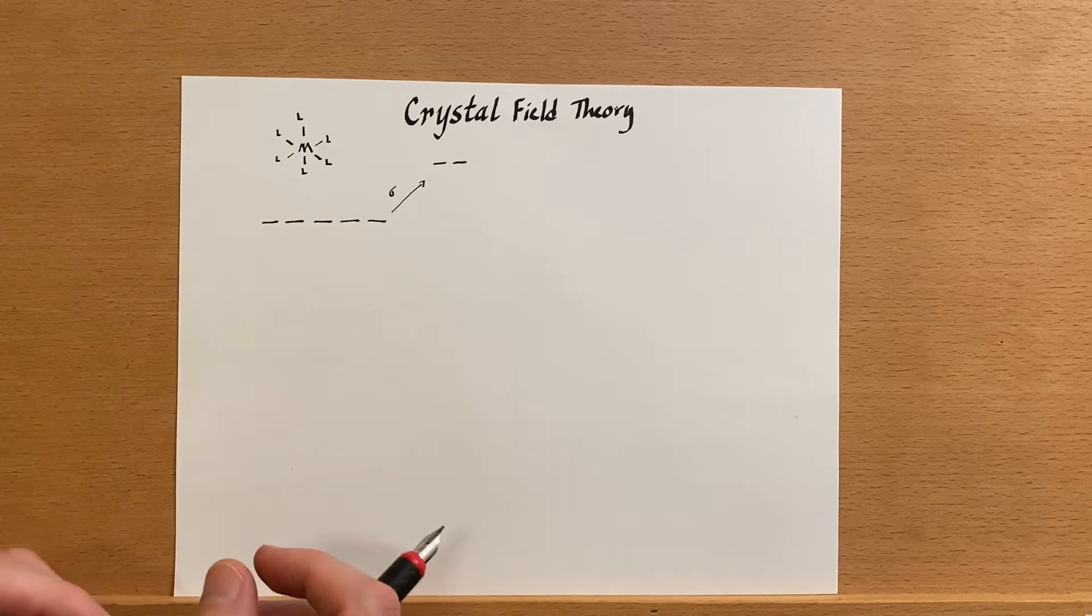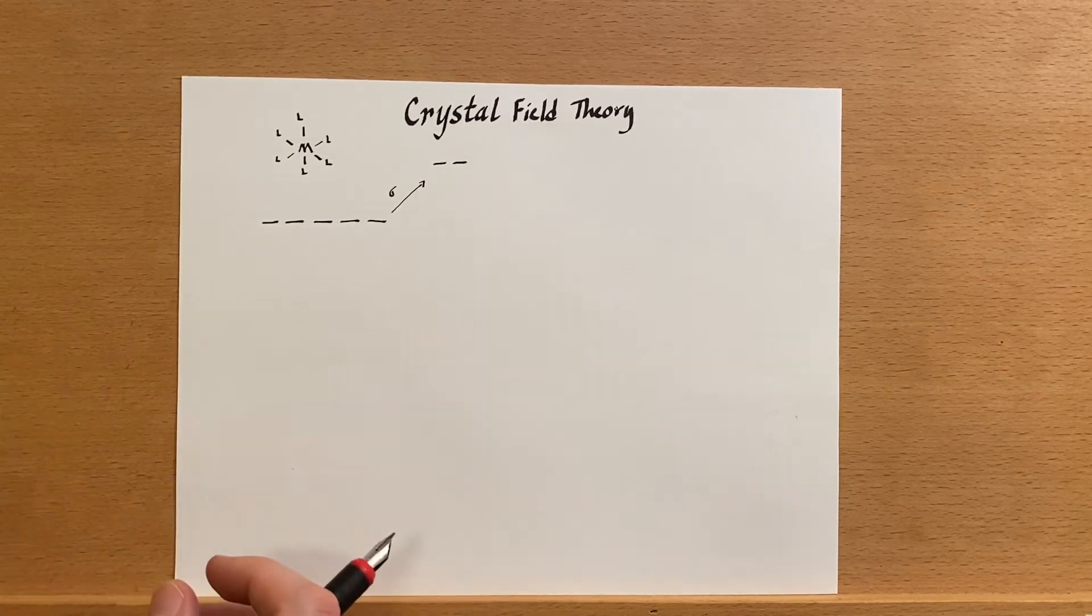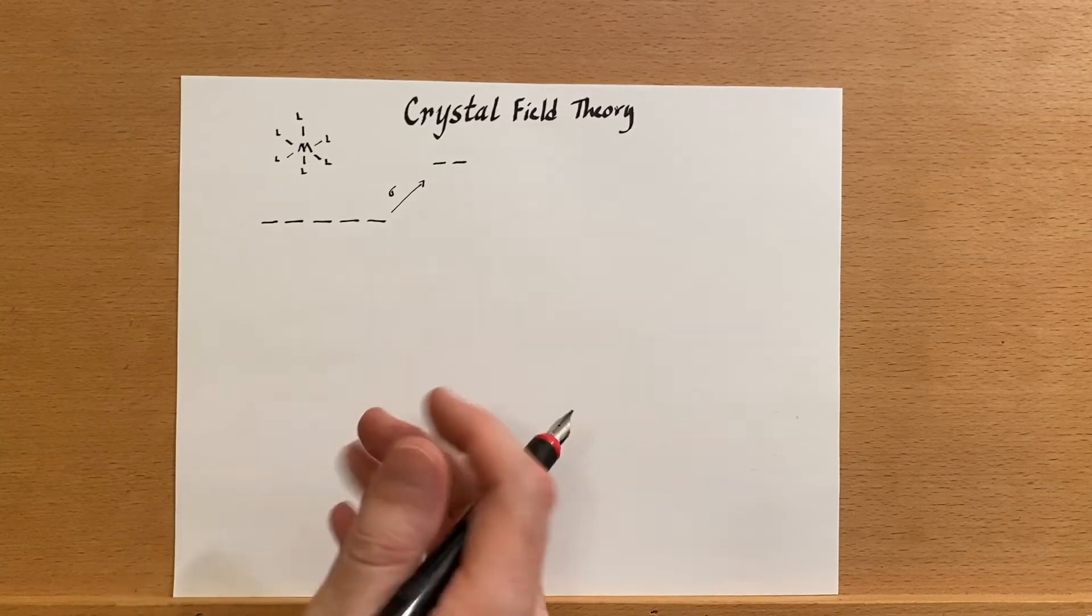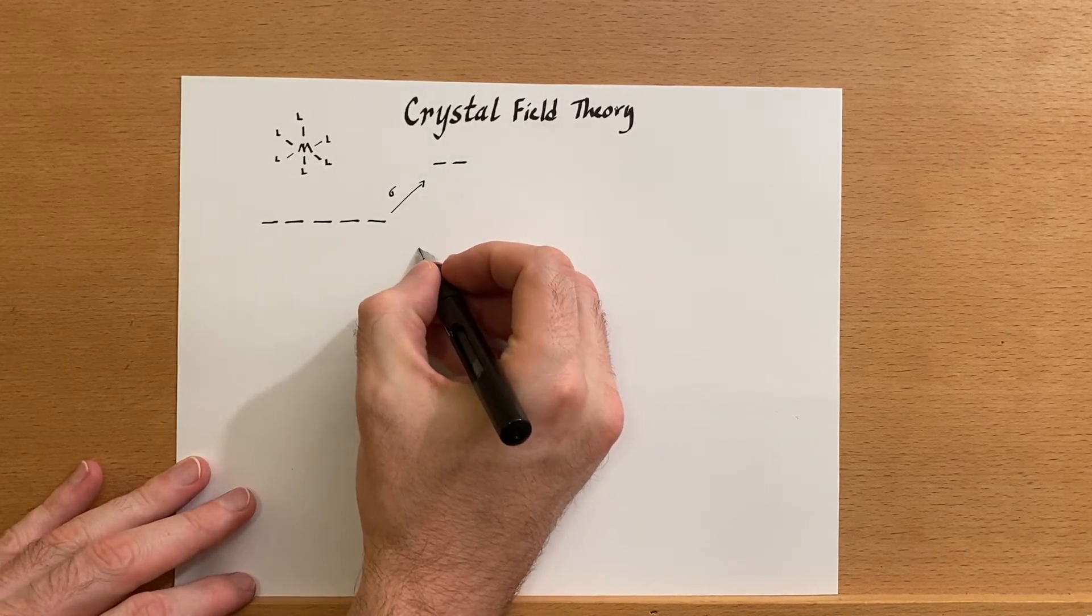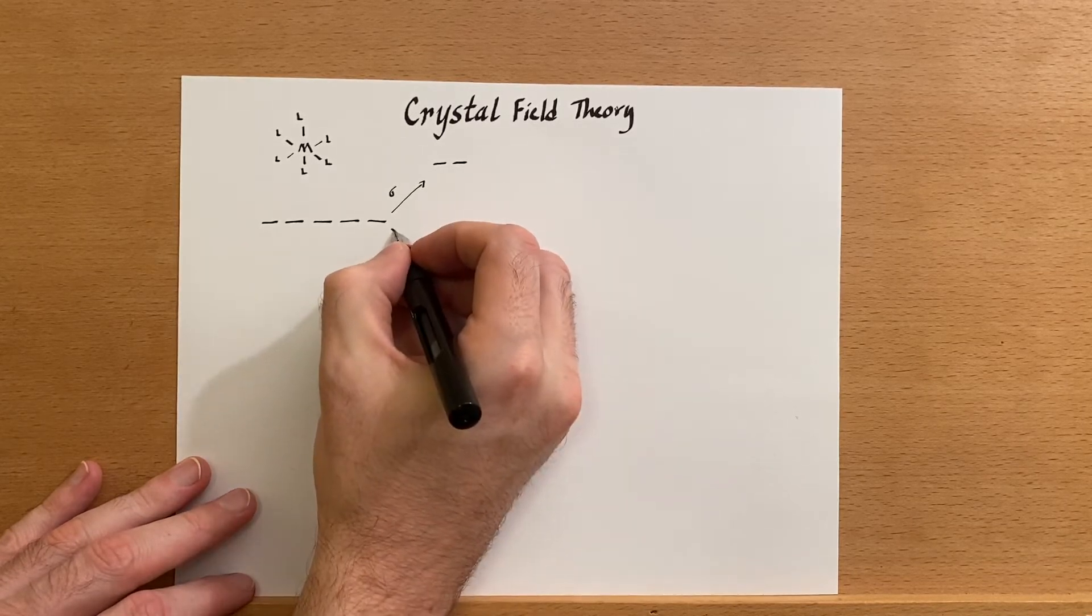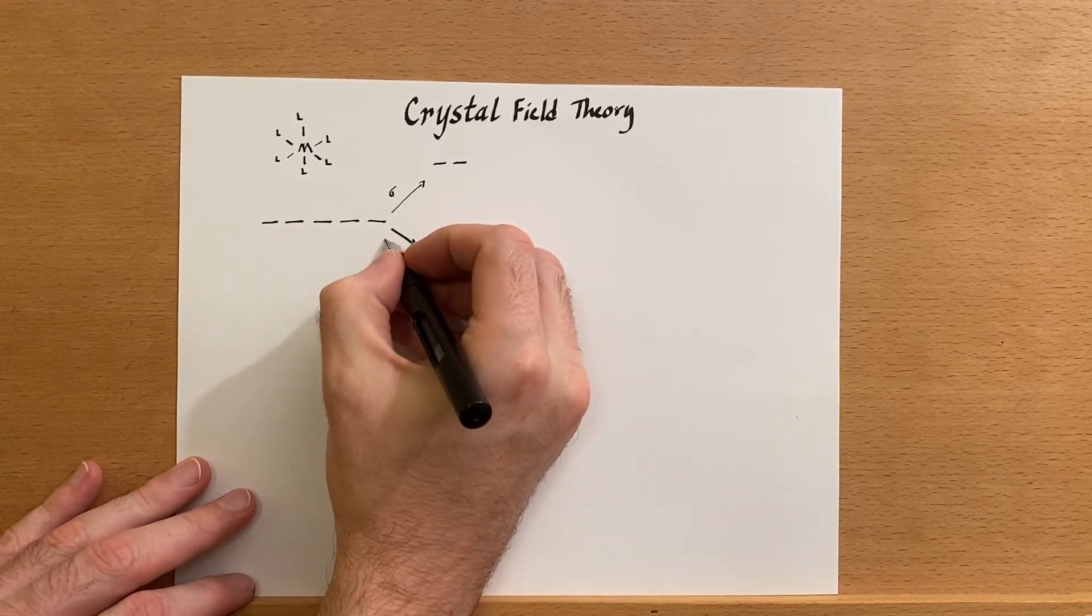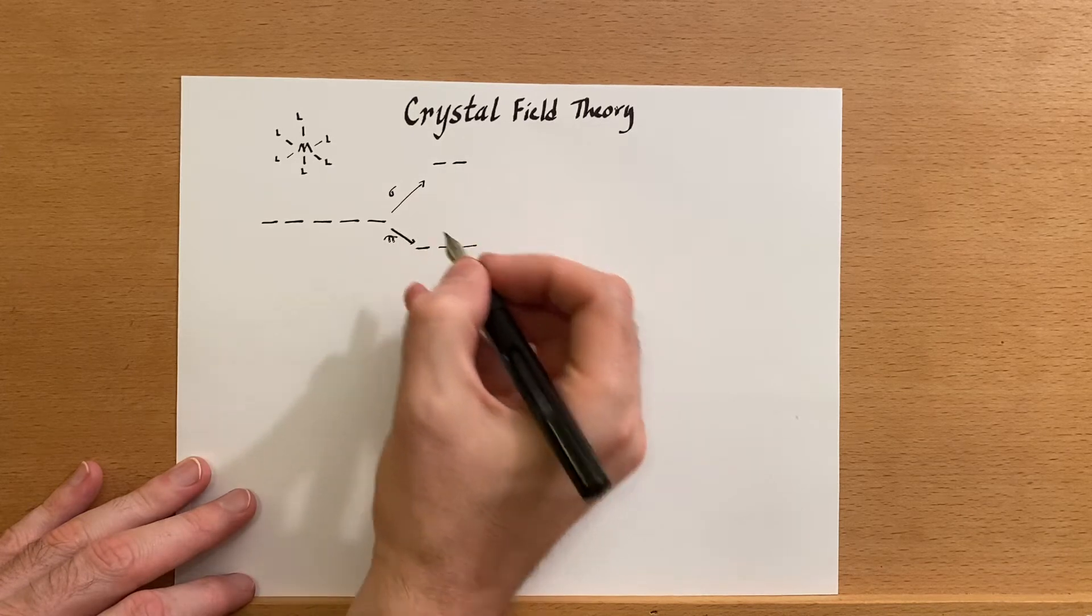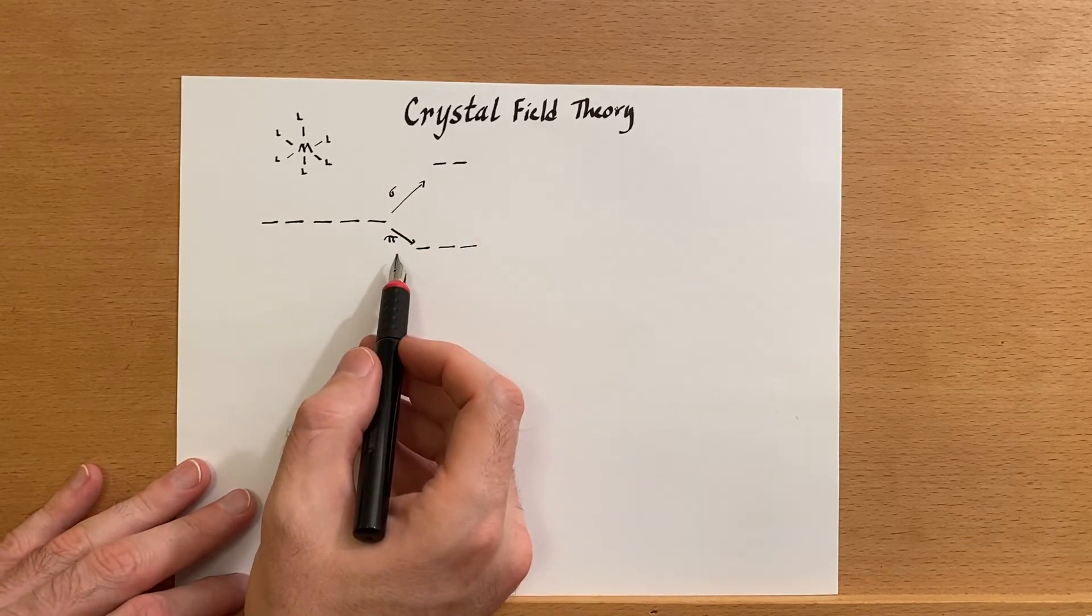If the metal can send some of its electron density back into the ligand through back bonding, that can stabilize those orbitals, lowering them in energy. So we'll have some lower orbitals, and I'm just going to write pi here so that we remember that this is a pi stabilization.